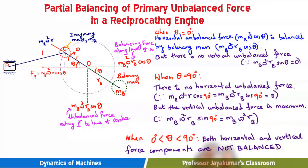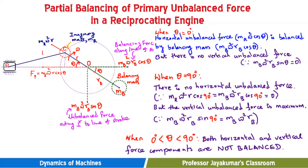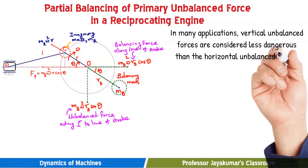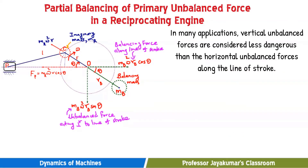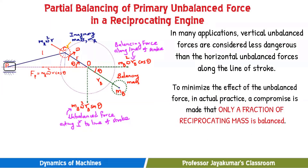When θ = 90°, there is no horizontal unbalanced force but the vertical unbalanced force is maximum. When the angle is between 0° and 90°, we have unbalanced force components in both horizontal and vertical directions. That is why complete balancing of the primary unbalanced force is not possible in a reciprocating engine. In many applications, vertical unbalanced forces are considered less dangerous than horizontal unbalanced forces along the line of stroke.